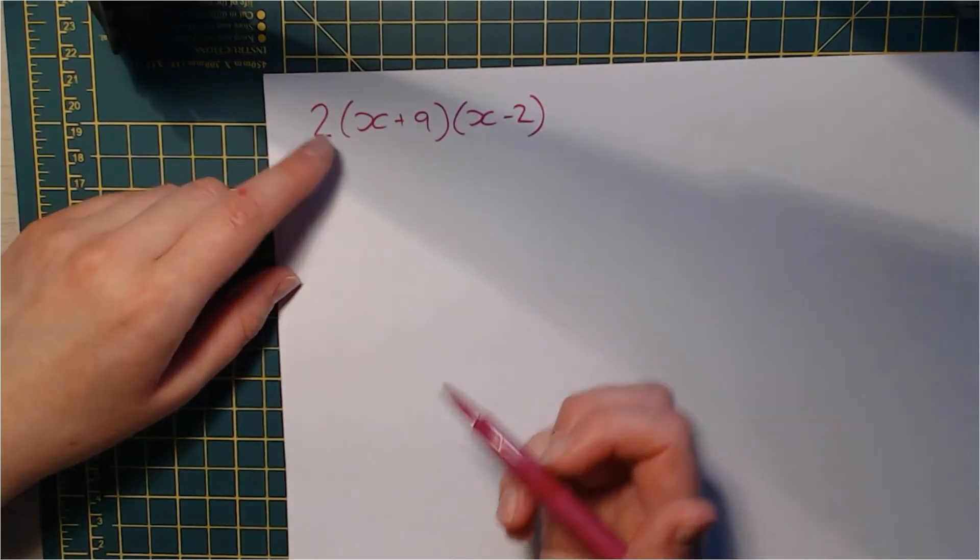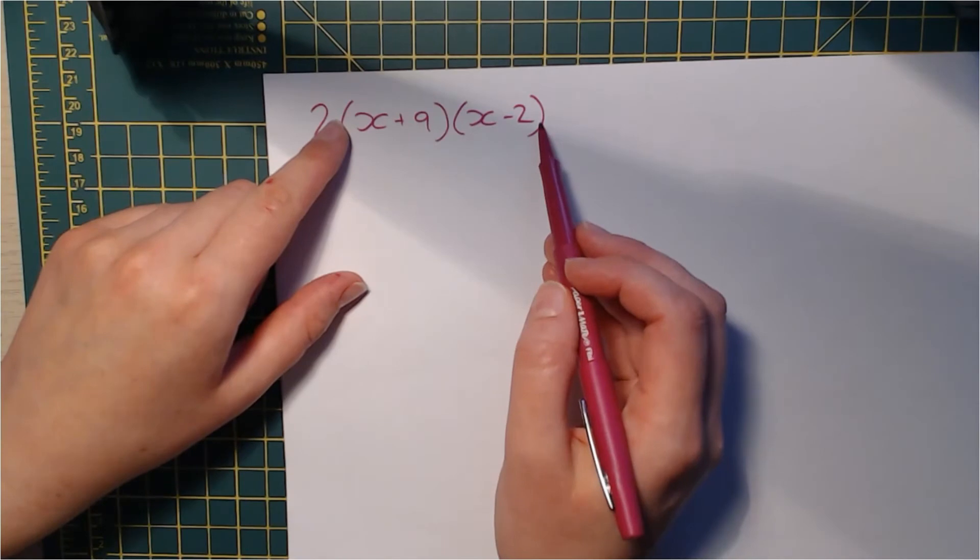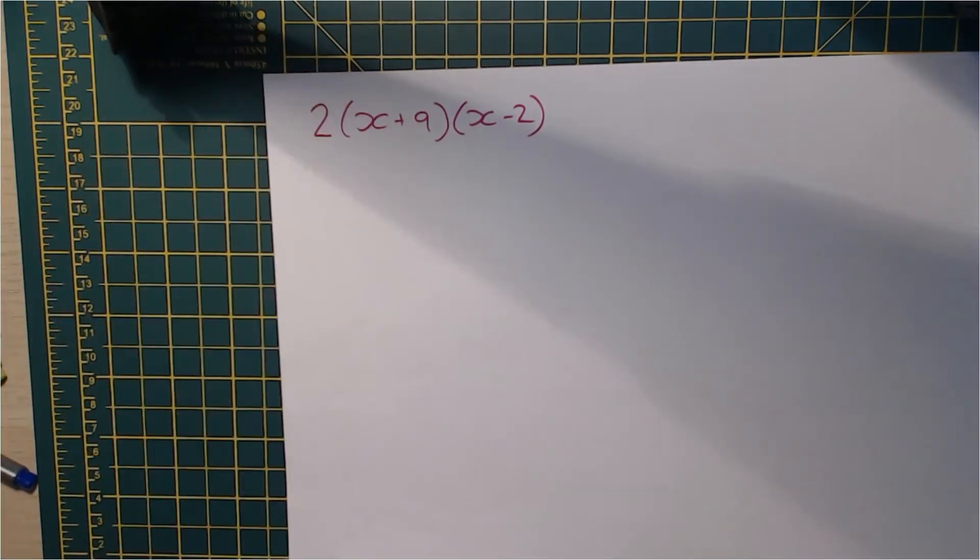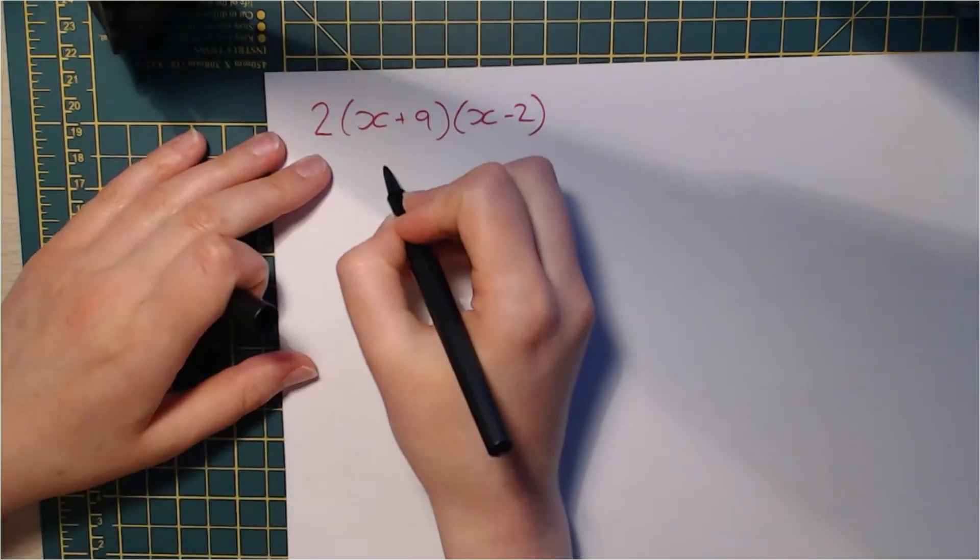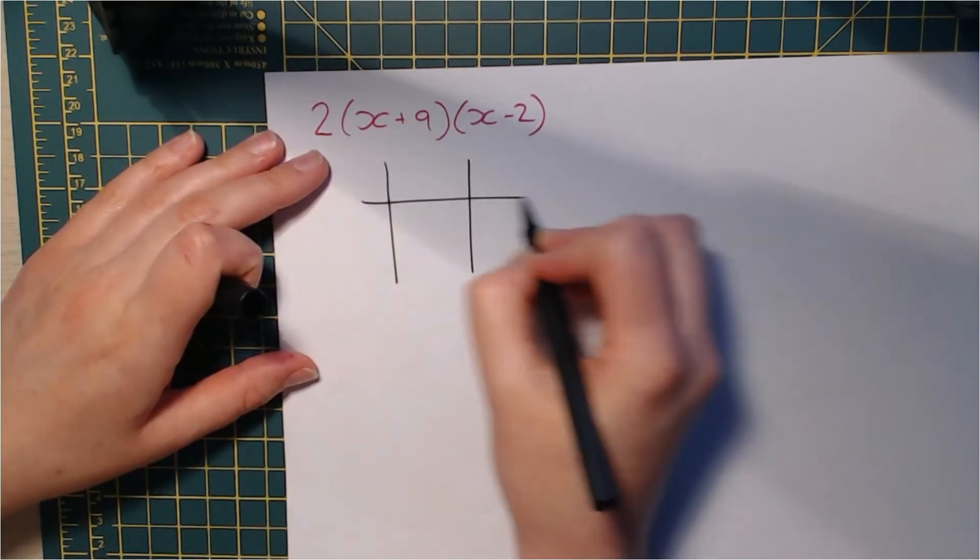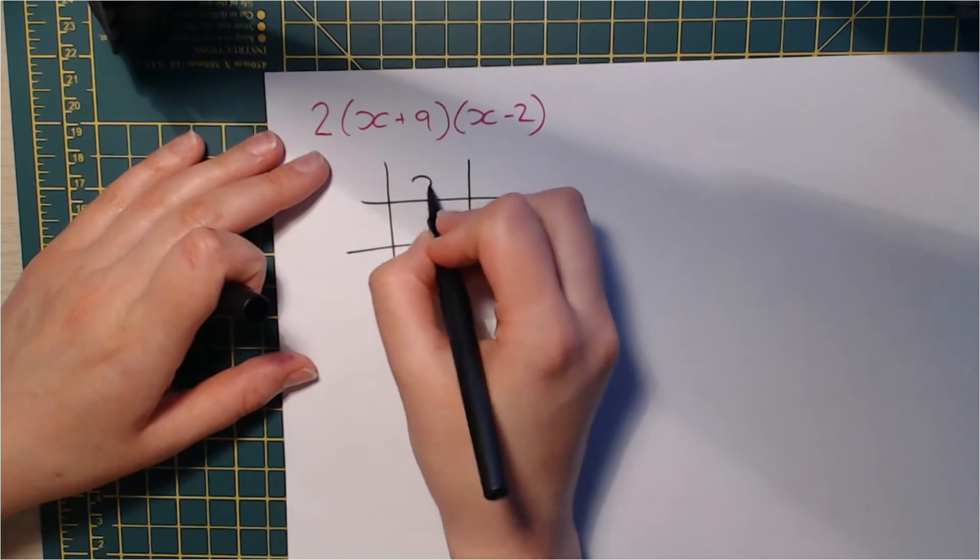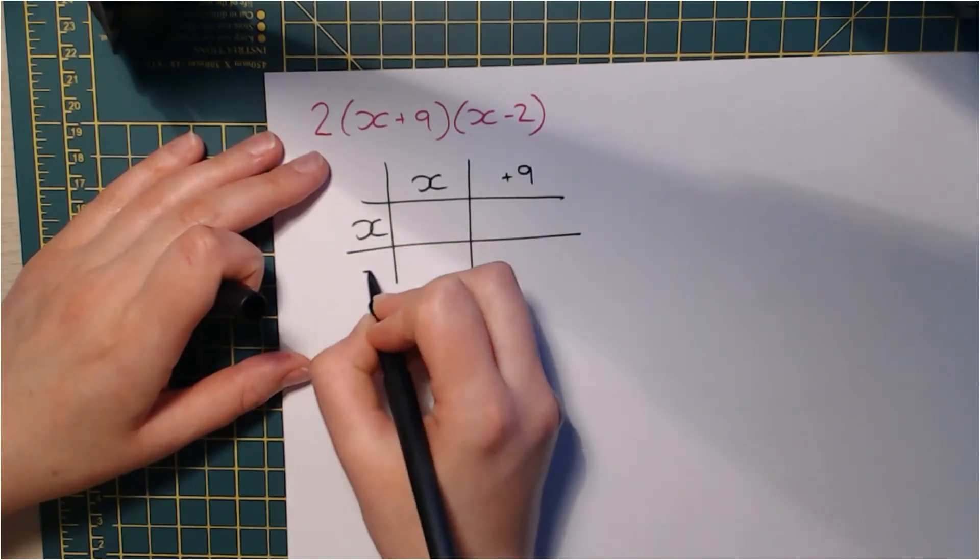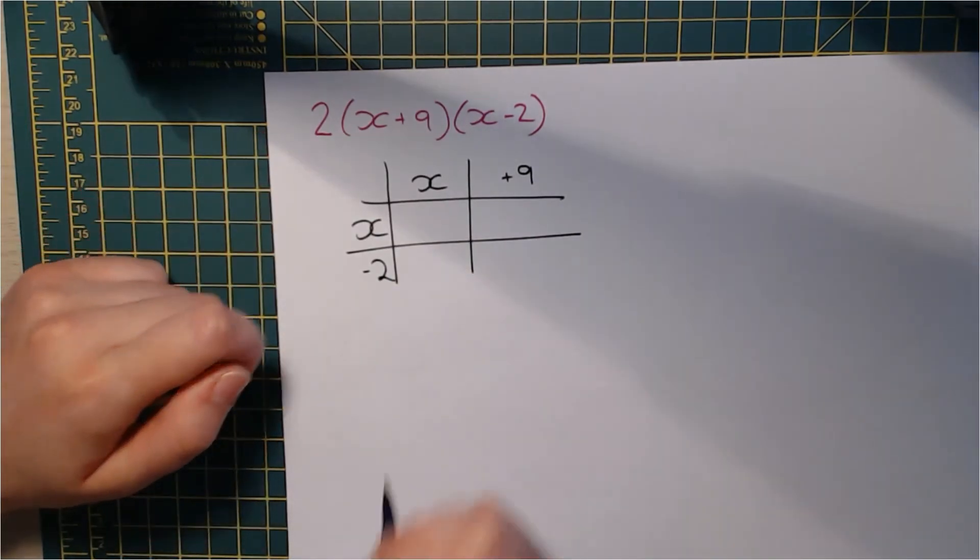So I'm going to do the expansion here using the grid method and then we're going to come back and consider that 2. So we're going to ignore it for a minute, the number 2 at the front. And let's just do my grid, x plus 9, x subtract 2.